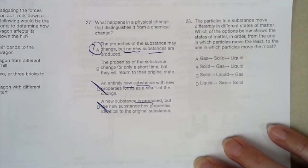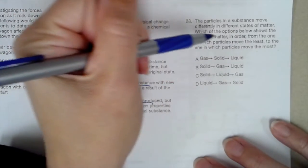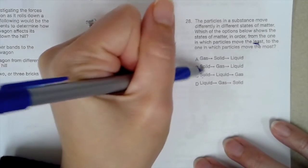The particles in a substance move differently in different states of matter. Which of the options below shows the states of matter in order from the one in which particles move the least to the one in which particles move the most? So remember, the one in which the particles are most tightly packed is a solid. So since they're so tight in a solid, they're going to move the least in a solid. So B and C both have solid first.